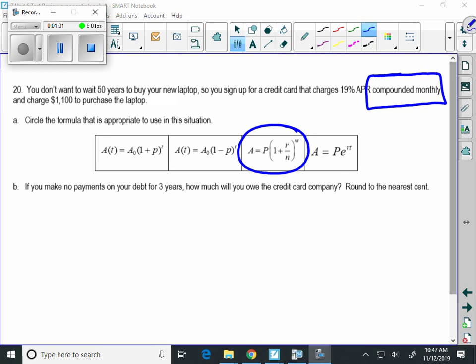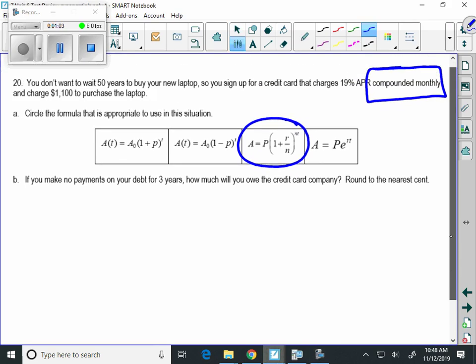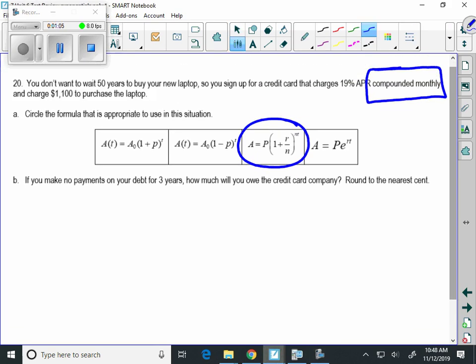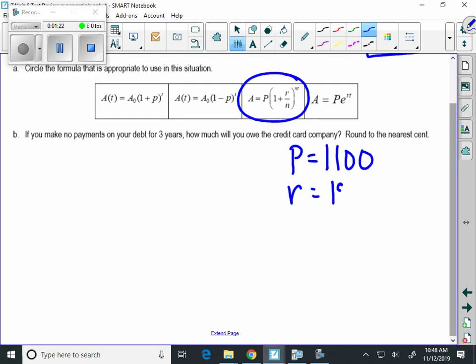Well, what we know about this problem is that we're going to charge $1,100. That's going to be our P, that's like A sub 0 in some of the other problems. That's going to be our original amount. Our rate in this problem is 19%, and once again reminder, we need to move the decimal one, two spaces to the left, so this is going to be 0.19.